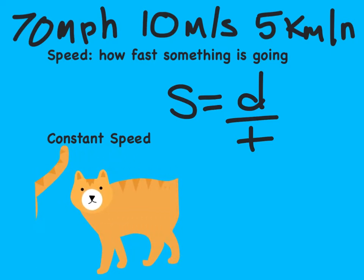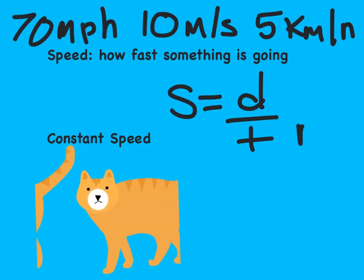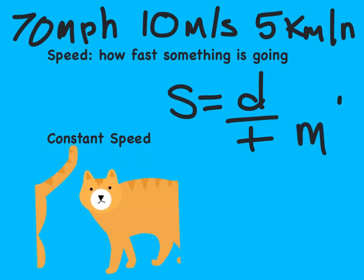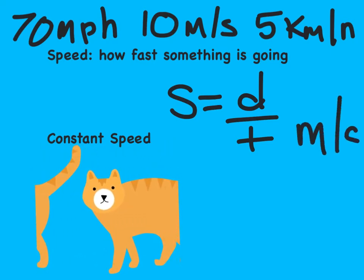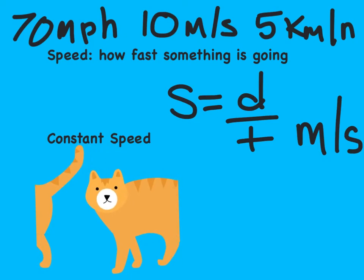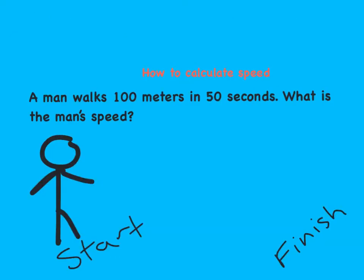Speed is usually measured in meters per second. Let's go ahead and try to solve a practice problem. This example says a man walks 100 meters in 50 seconds. What is the man's speed?